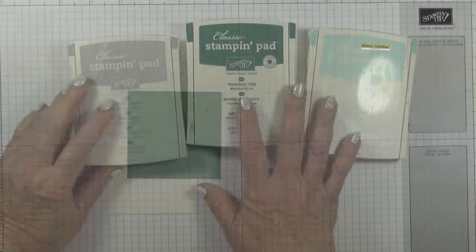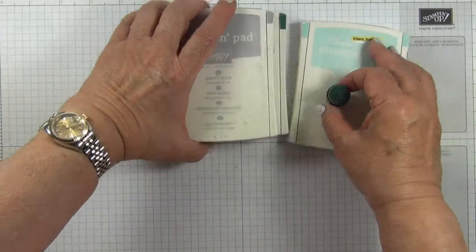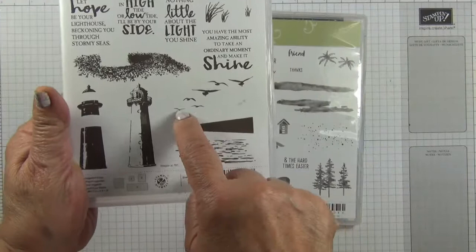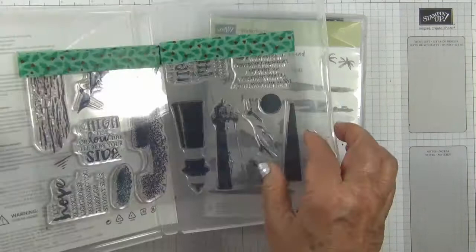The inks I'm using are Smoky Slate, Tranquiltide and Soft Sky and you also need a sponge dauber. I'm using Waterfront as well as High Tide. I'm using this little highlighter here and also the Seagulls.